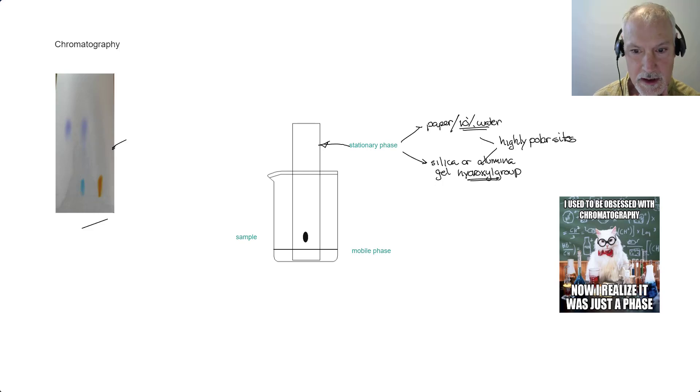Our mobile phase is the solvent. We can choose solvents of varying polarity, and it makes its way up. Hence, it's referred to as being mobile.